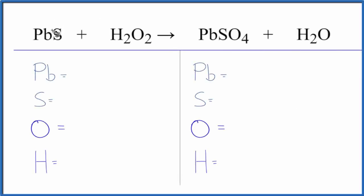In this video, we'll balance the equation for PbS plus H2O2. This is lead 2 sulfide, this is hydrogen peroxide. A bit of a tricky one.